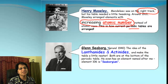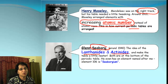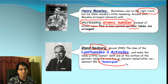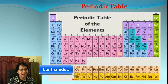There was one more change — Seaborg made that change. There are some elements which are called lanthanides and actinides, and Seaborg decided to put those at the bottom of the periodic table. He was also smart enough to name one of the elements after himself: Seaborgium. So here is how our modern periodic table looks, with the two rows for lanthanides and actinides at the bottom.